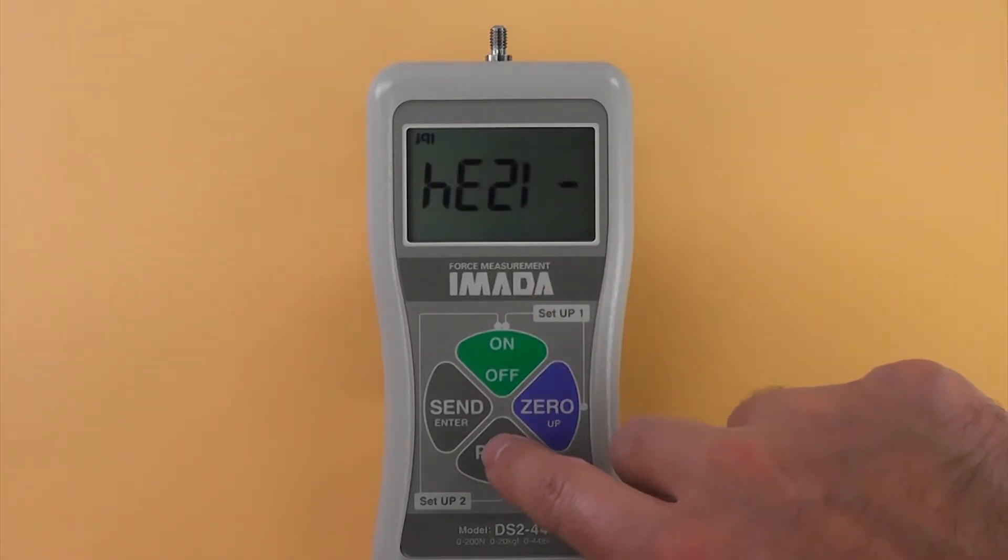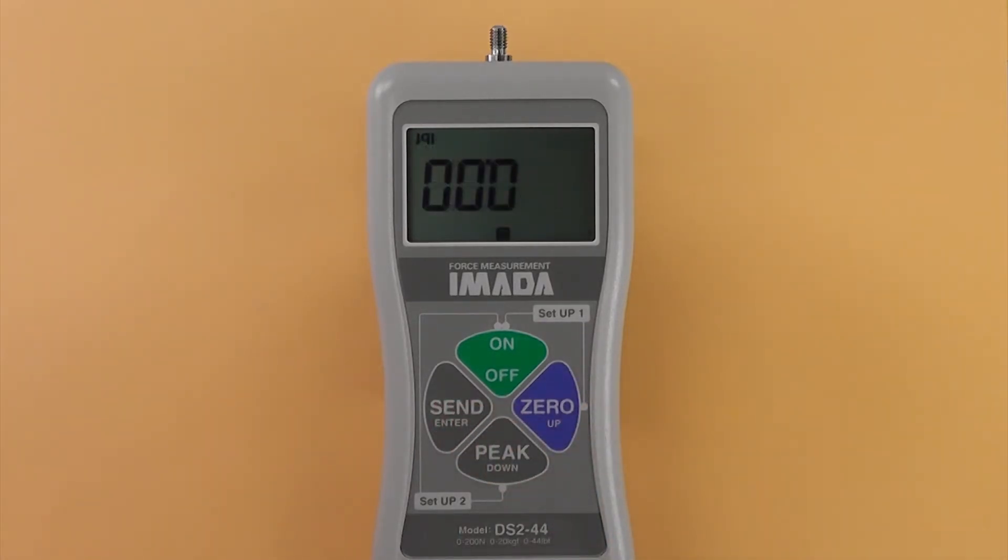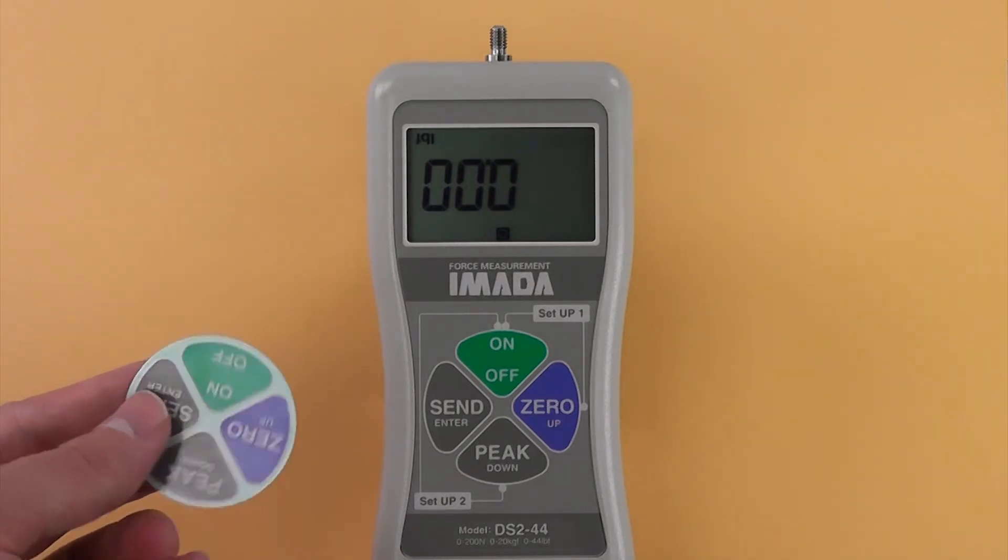Press PEAK to cycle between standard and reverse display. Press SEND to select. For easier readability, the reverse display sticker can be attached to a gauge mounted to a test stand.